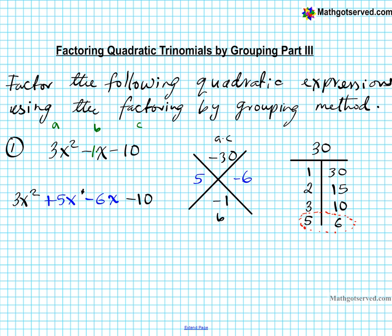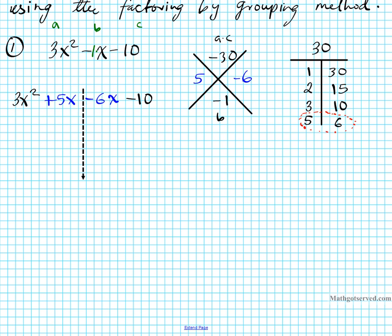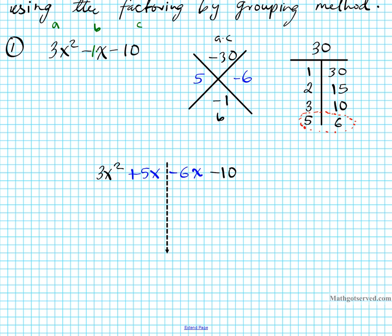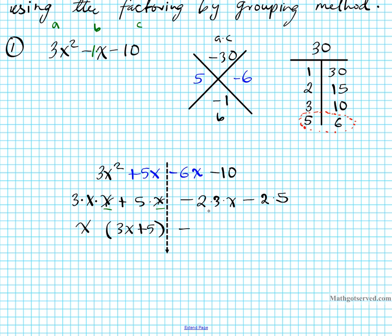Now I'm going to break it down to center and factor by grouping. So it's going to look like: 3 times x times x, plus 5 times x, minus — if I break down 6 it's 2 times 3 times x, and if I break down 10 it's 2 times 5. Now from the first two terms, what's common? I can factor out x. If I factor out x, it's as though I'm dividing by x, so I'm left with 3x plus 5. On the second side, I'm going to take out a minus — 2 is common to both, so if I factor out 2 I'm left with 3x, and since I took out a minus, the sign changes to plus 5.